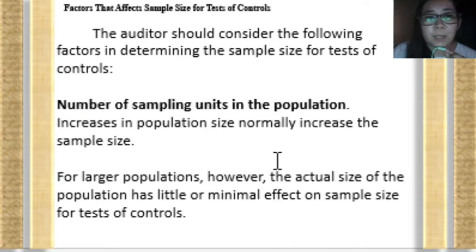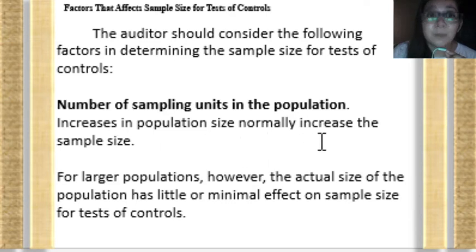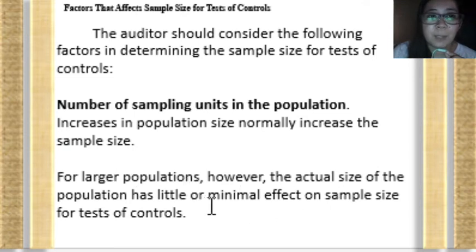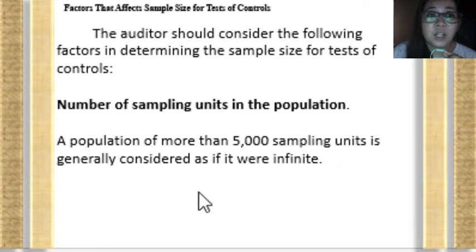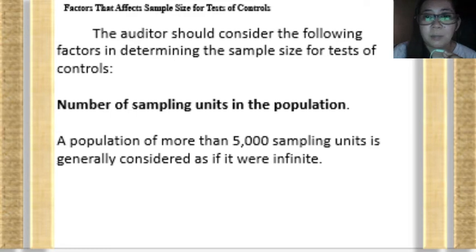The fifth factor is the number of sampling units in the population. Increases in population size will normally increase sample size. However, for larger populations, the actual size of the population has little or minimal effect, especially for test of controls. For example, a population of more than 5,000 units is generally considered as if it were infinite.